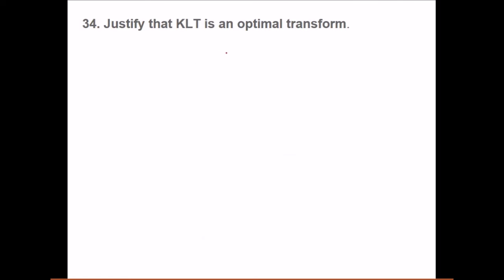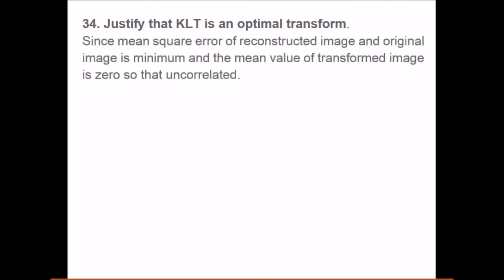Justify that it is optimal transform. Since mean square error of reconstructed image from original is minimum, and covariance of transformed image is zero, so that we have uncorrelated data. And this is why it is optimal.